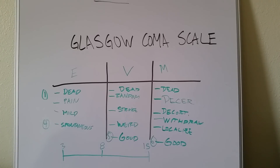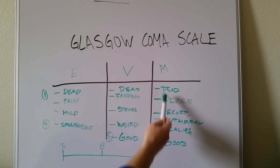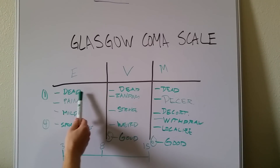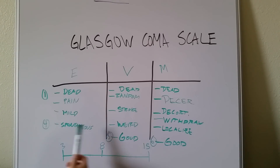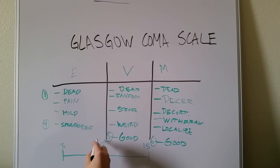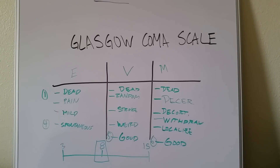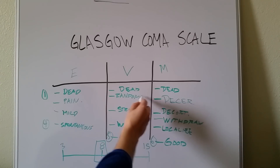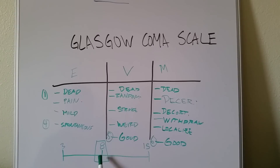Looking at the continuums — one to four for Eyes, one to five for Verbal, one to six for Motor — the lowest combination is one, one, one, which is dead. The highest is four, five, and six, which equals fifteen. A score of eight is widely accepted as the cutoff: above eight means we can work with this and treat the patient; below eight is not a good sign and indicates comatose or severely brain-injured status.